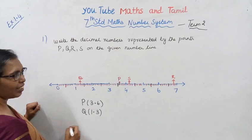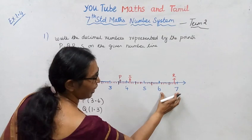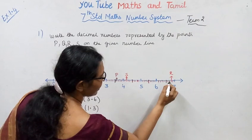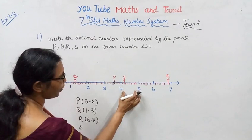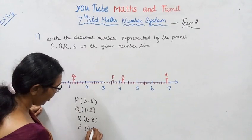Point R: six equals seven. Let's count - one, two, three, four, five, six, seven, eight. R is at 6.8.